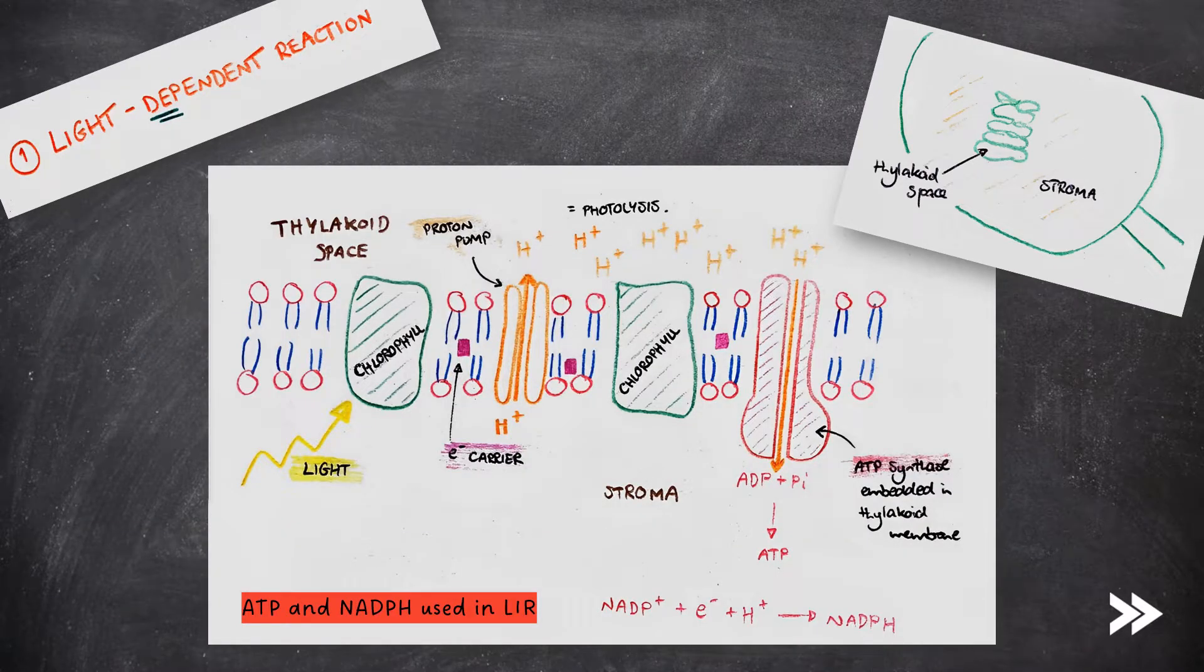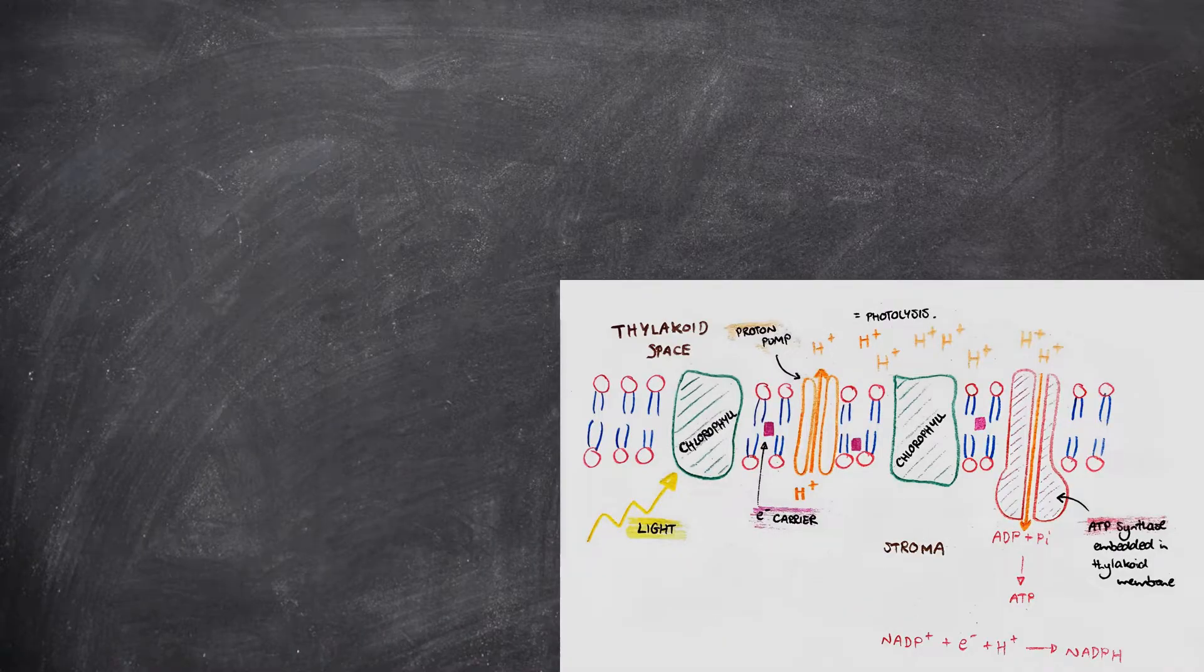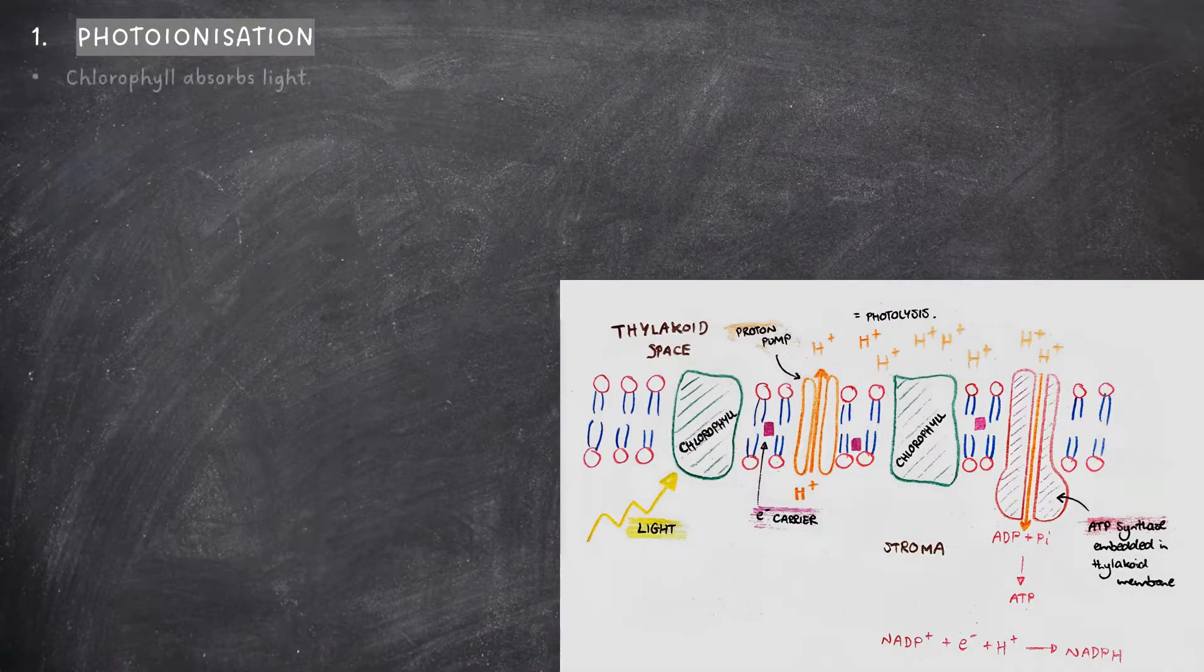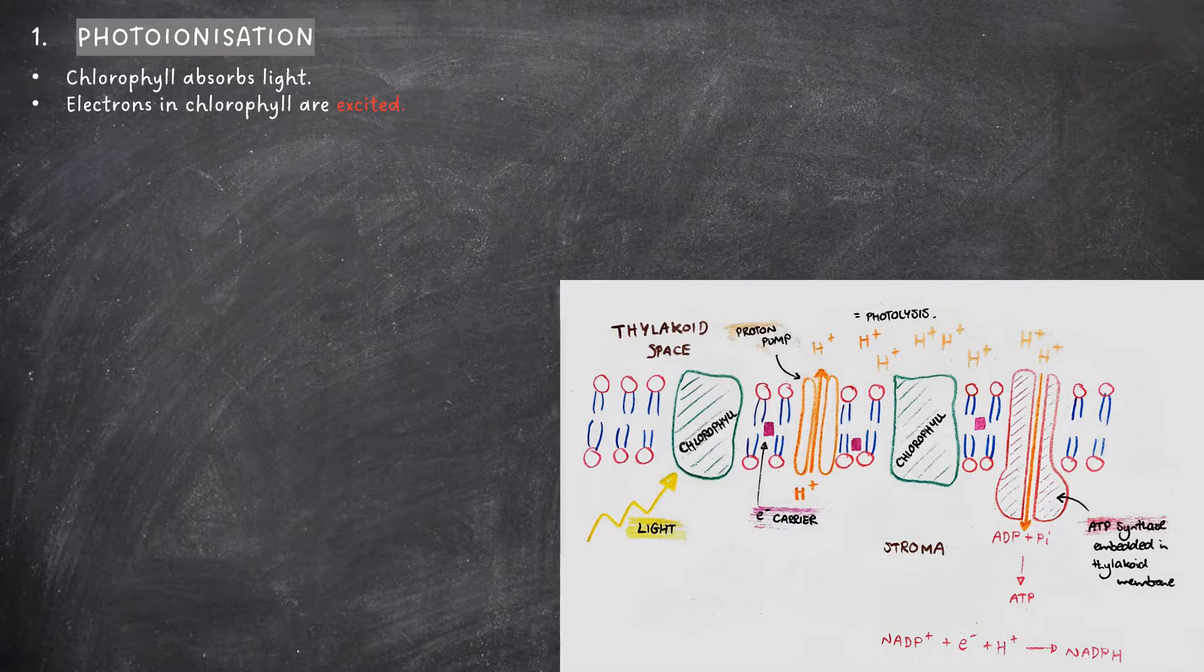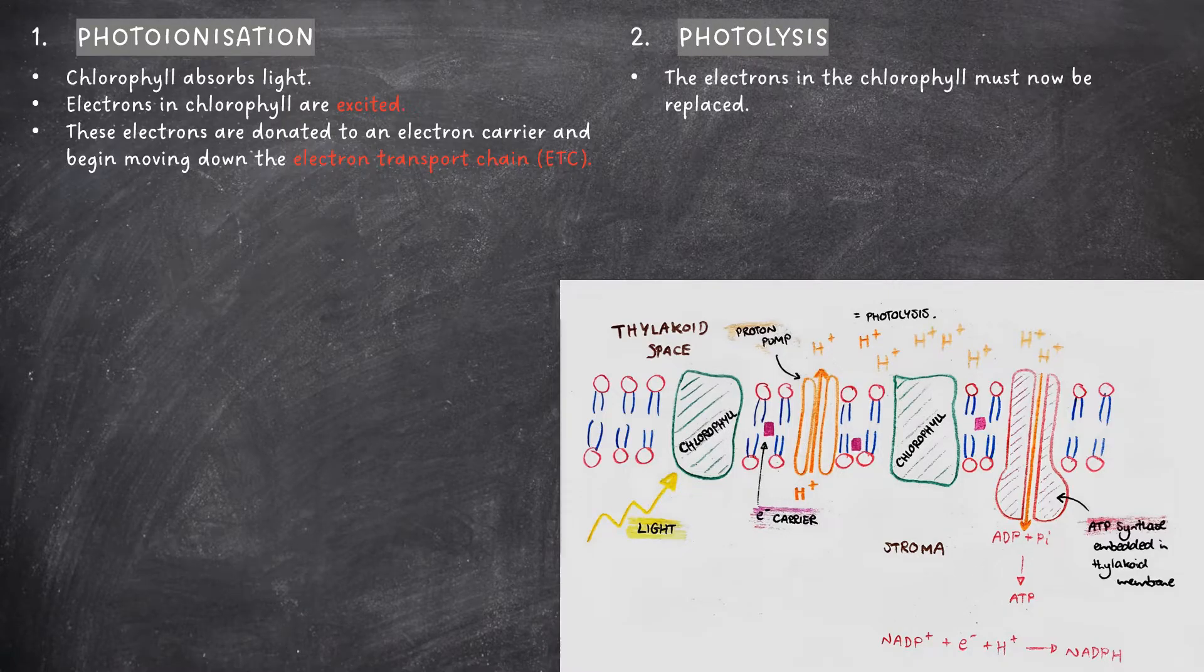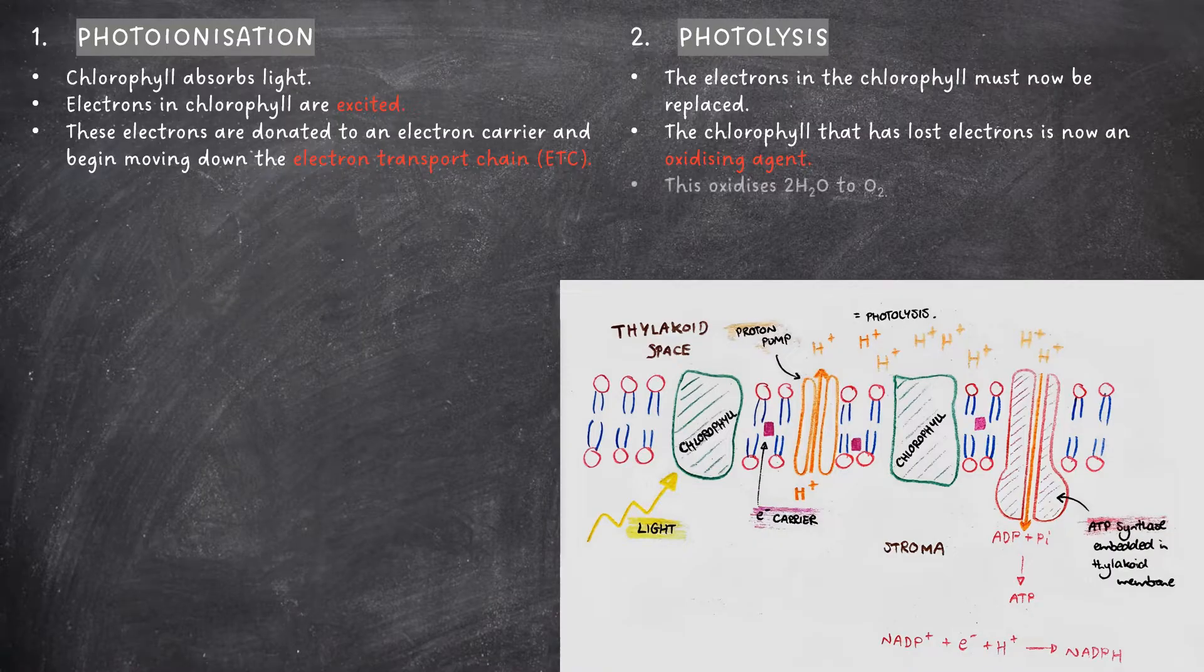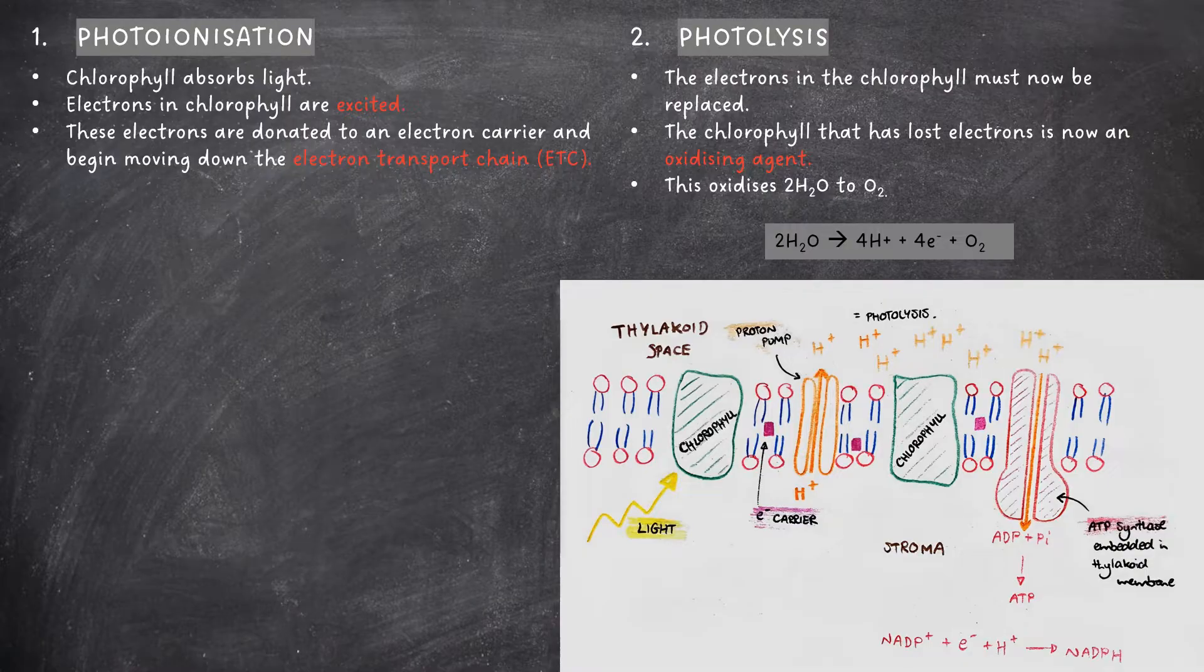Okay so let's move on to the first main stage in photosynthesis, which is the light-dependent reaction. This occurs at the thylakoid membrane. The first stage is called photoionization. Here the chlorophyll absorbs light. Electrons in the chlorophyll are excited. These electrons are then donated to an electron carrier and begin moving down the electron transport chain. Next we have photolysis. The electrons in the chlorophyll must now be replaced. The chlorophyll which has lost electrons is now an oxidizing agent. This oxidizes two water molecules to form oxygen. Here is the full equation. This increases the concentration of hydrogen ions in the thylakoid space.